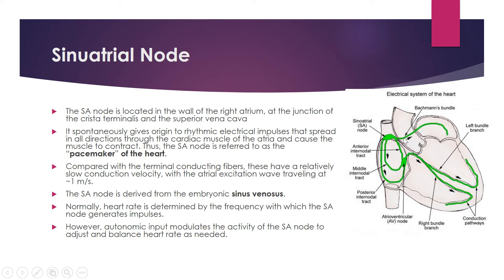When we open the right atrium, the SA node can be seen between two structures: the crista terminalis and the opening of the superior vena cava. The SA node spontaneously generates rhythmic electrical impulses that spread in all directions through the cardiac muscle of the atria, causing the muscle to contract. That is why the SA node is called the pacemaker of the heart.